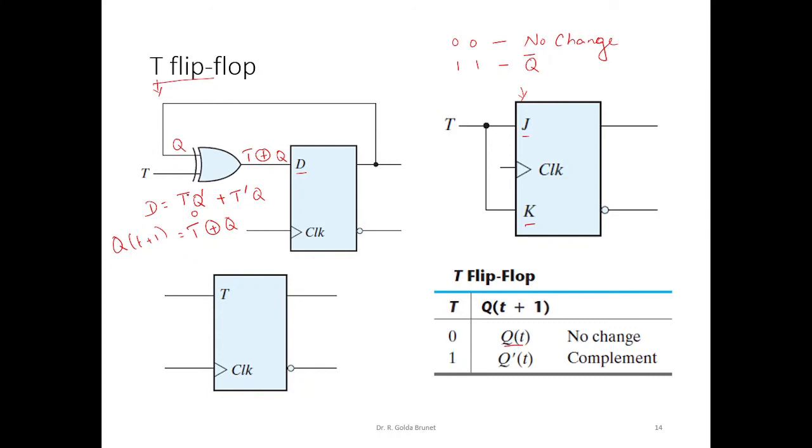When T is equal to 1, T bar is equal to 0, therefore, this term is going to vanish and T is 1, therefore, what remains is Q bar. And at time T, we supply Q bar as input to D. So, we observe Q bar at time T plus 1. That means that it is the complement.